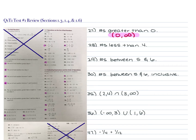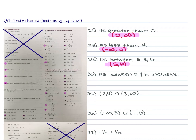For 28, we have the numbers less than 4. The smallest number is negative infinity, and the largest is 4. Negative infinity automatically gets a parenthesis, and the 4 also gets a parenthesis because it's not including 4. For 29, we have the numbers between 5 and 6 — they are not equal to 5 or 6, so both get parentheses. For 30, we have the numbers between 5 and 6 inclusive. Inclusive means brackets, so it's [5, 6] with brackets on both.